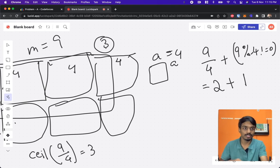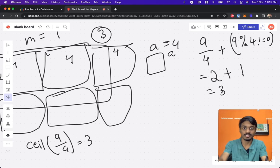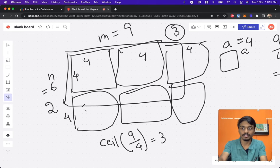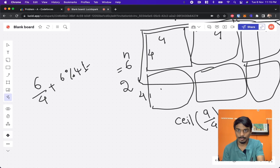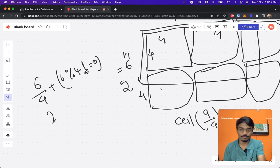So how much you got? This is a true value, right? 9 mod 4 not equal to zero, you get 3. So exactly like what you found here. And now let's see here, that is 6 by 4 plus 6 mod 4 not equal to zero. So this is 6 by 4 is 1 plus...